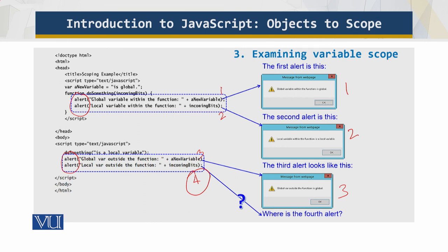That is why it was not displayed - the fourth alert is missing. Now you can understand the scope of variables and how they are declared and processed. That's all for this module.